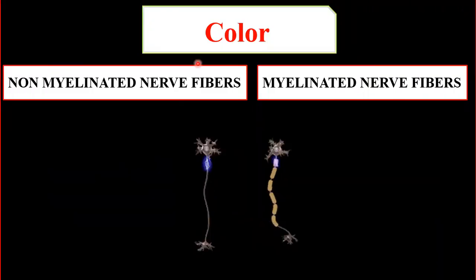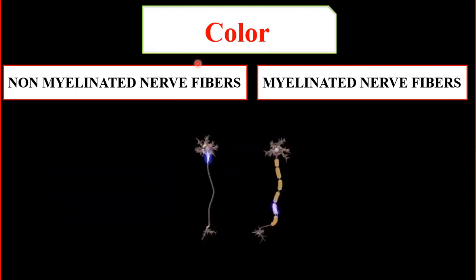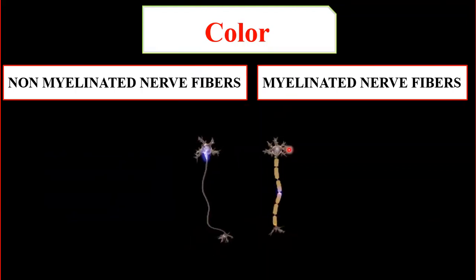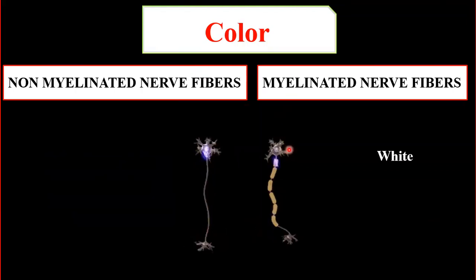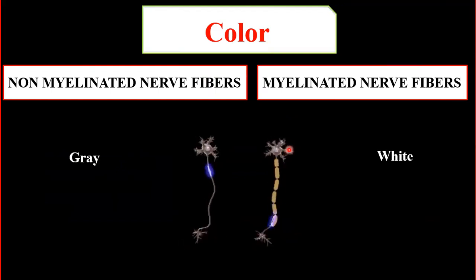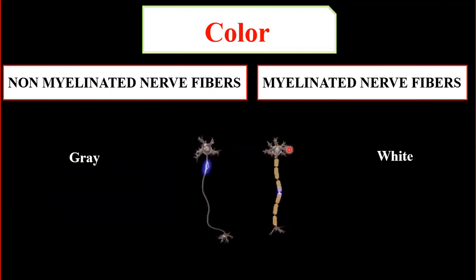Another difference is color: myelinated nerve fibers appear white in color, while non-myelinated nerve fibers appear gray in color.